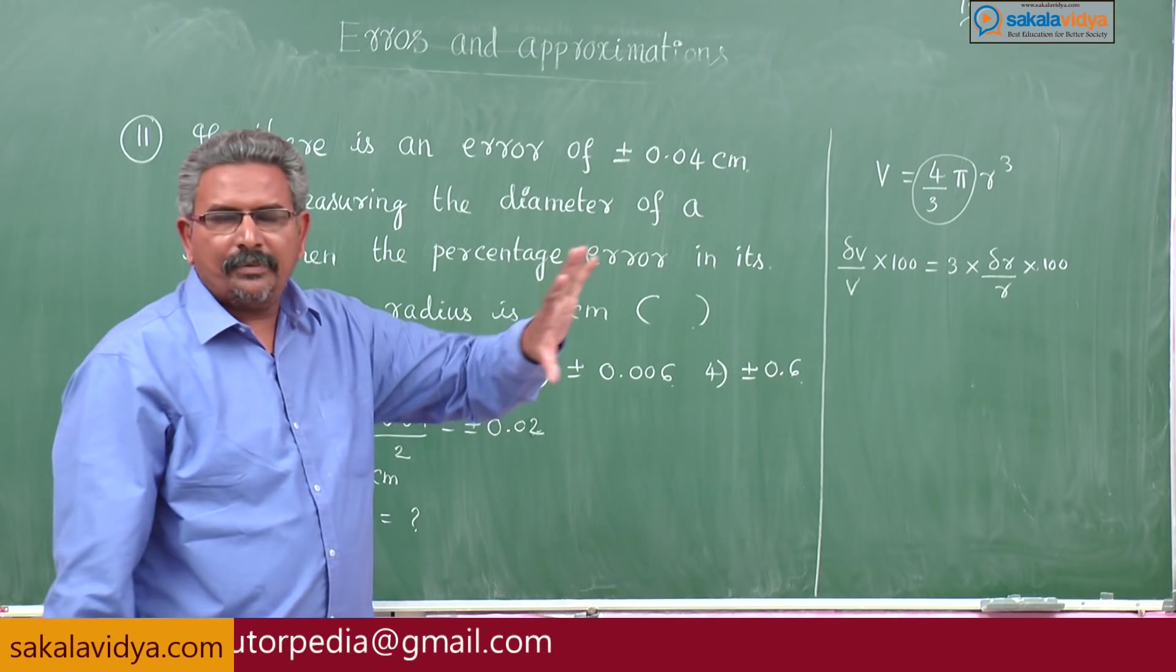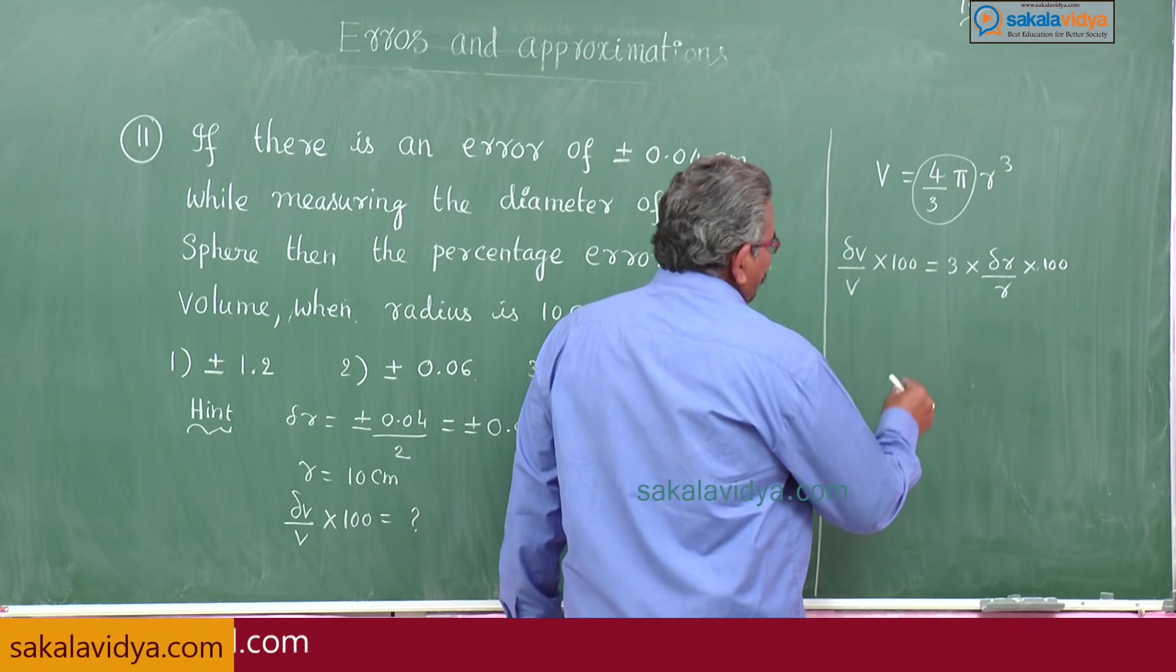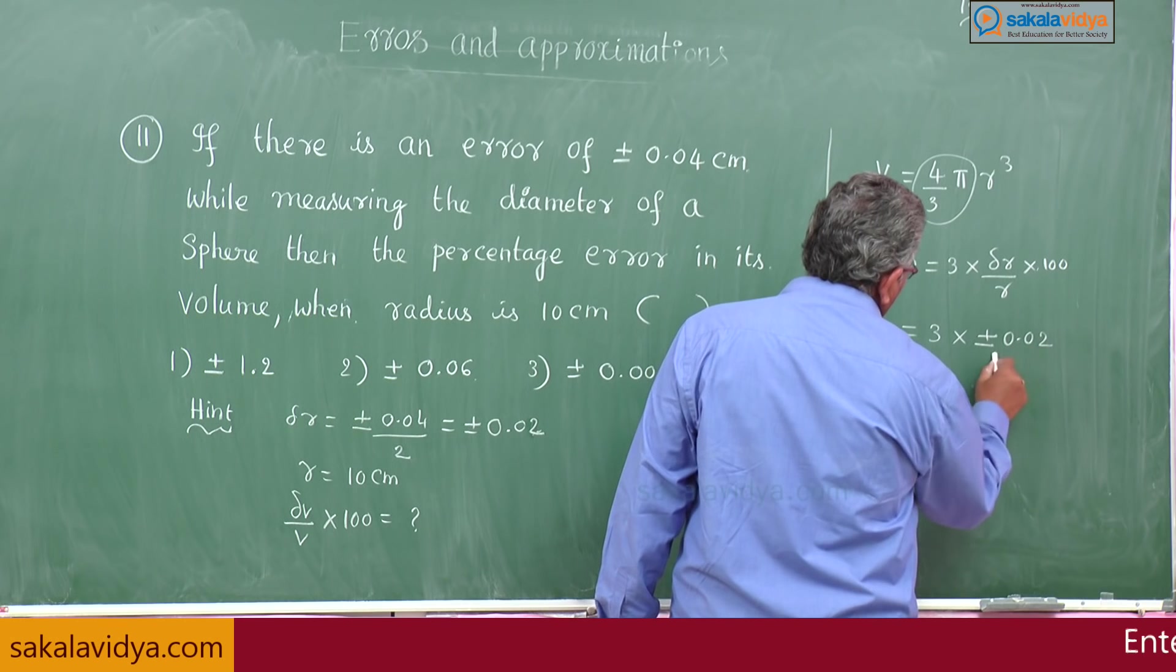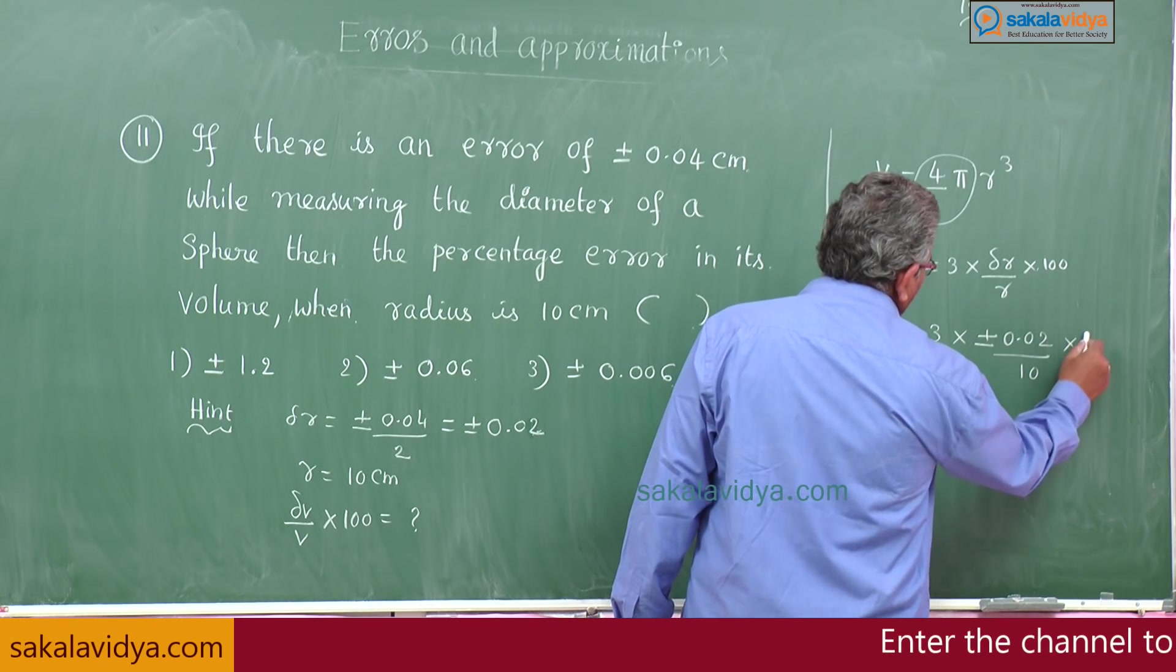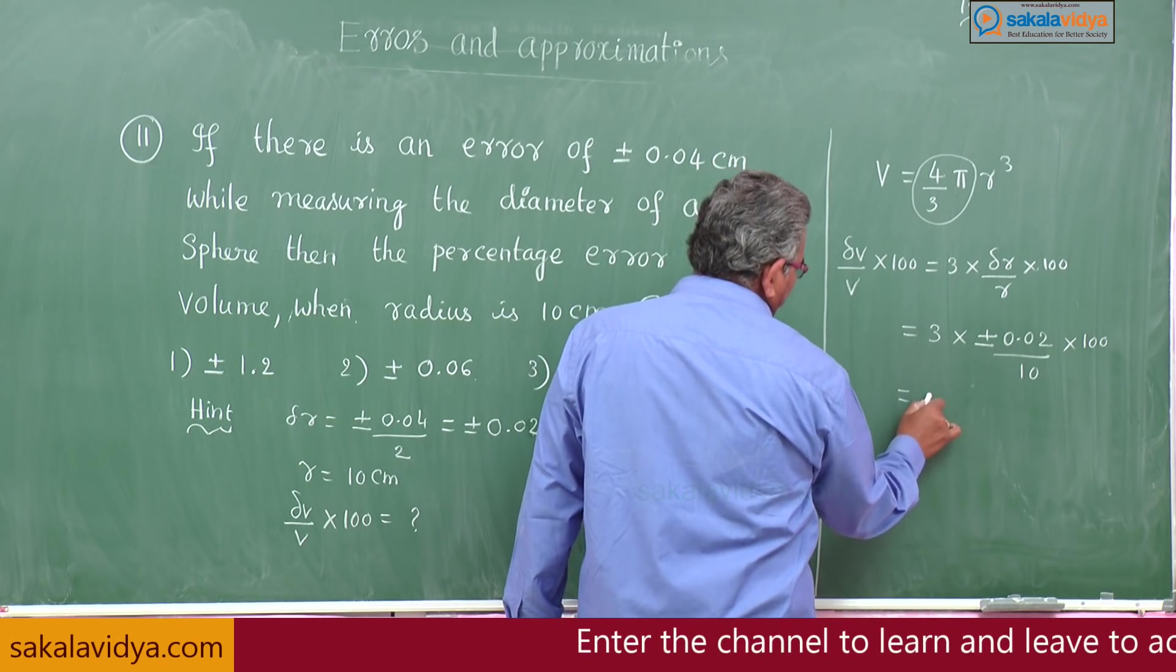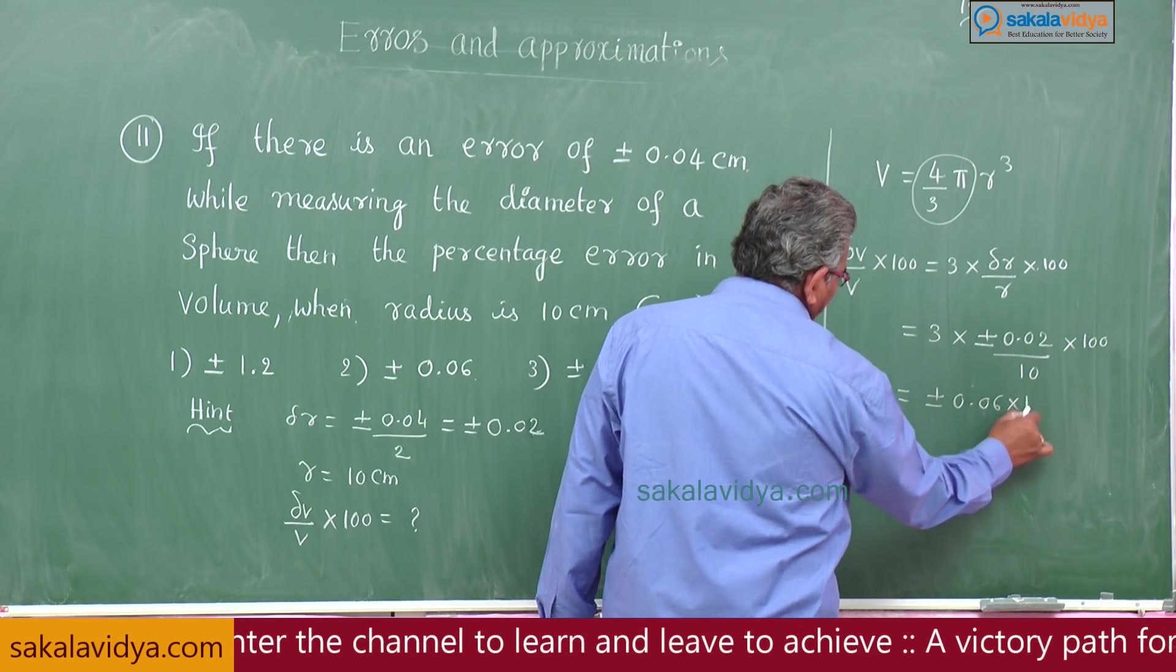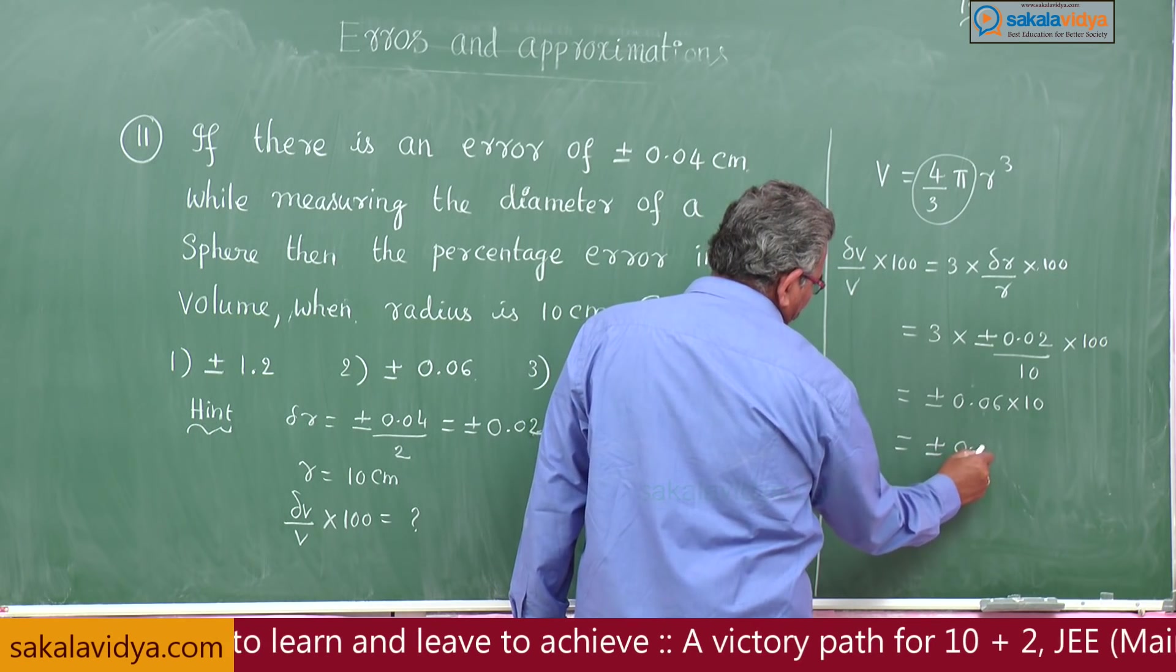We have to replace respective values: delta r is plus or minus 0.02, 3 times plus or minus 0.02 divided by r, r is 10, into 100. So this is we can write plus or minus 0.06 multiplied by 10, this is plus or minus 0.06.